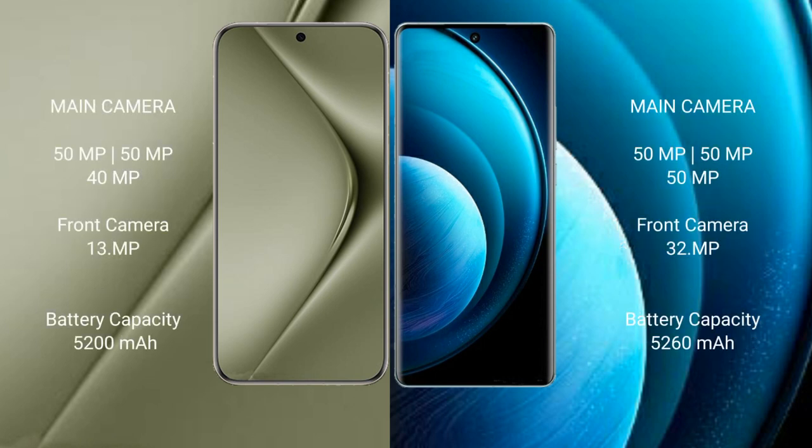The Huawei Pura 70 Ultra features a triple rear camera setup: 50MP plus 50MP plus 40MP, and a 13MP front camera. The Vivo X100 Pro also features a triple rear camera setup: 50MP plus 50MP, with a 32MP front camera. The Huawei Pura 70 Ultra has a 5200mAh battery with 100W fast charging support, while the Vivo X100 Pro has a 5400mAh battery with 100W fast charging support.